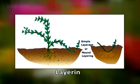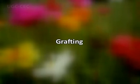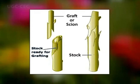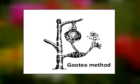In layering, roots are induced on a stem before it is detached from the plant body. The lower branch close to the ground is bent down and covered with soil; after some days roots develop and the branch can then be cut and grown as an independent plant. In grafting, parts of two different plants of closely related varieties are joined together so they live as a single plant. This is usually practiced among dicotyledonous plants, especially fruit trees. The rooted plant is called the stock, and the part being grafted over is called the scion.